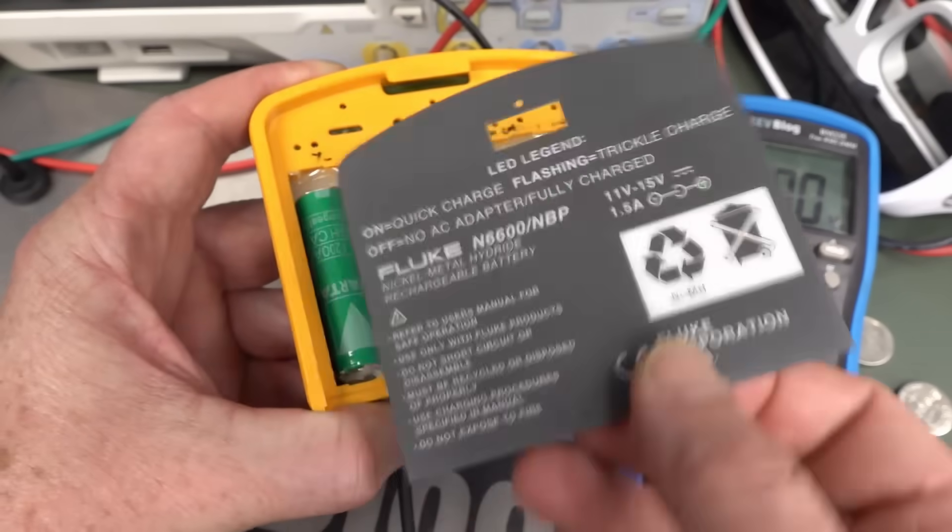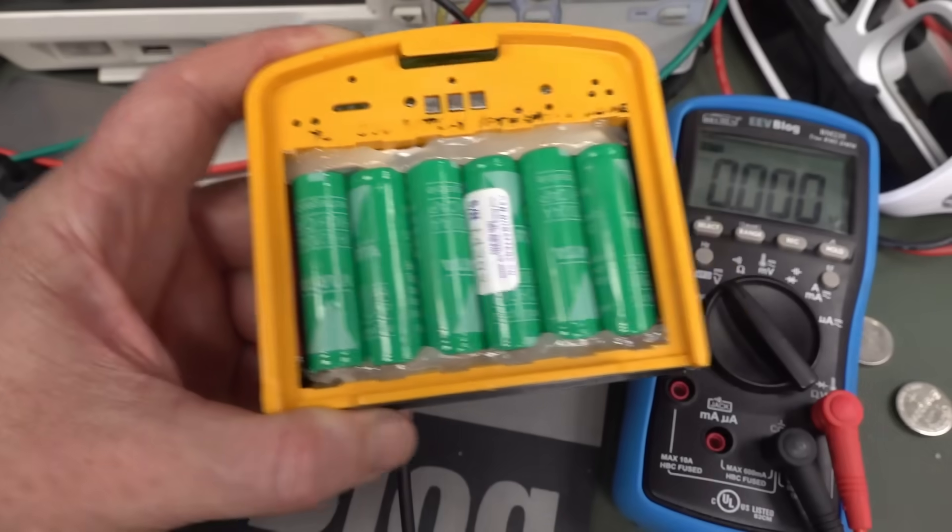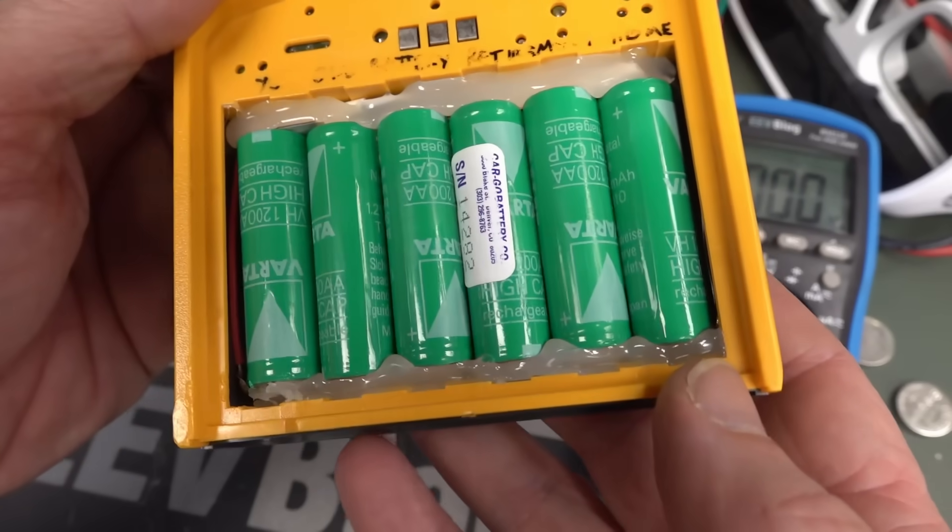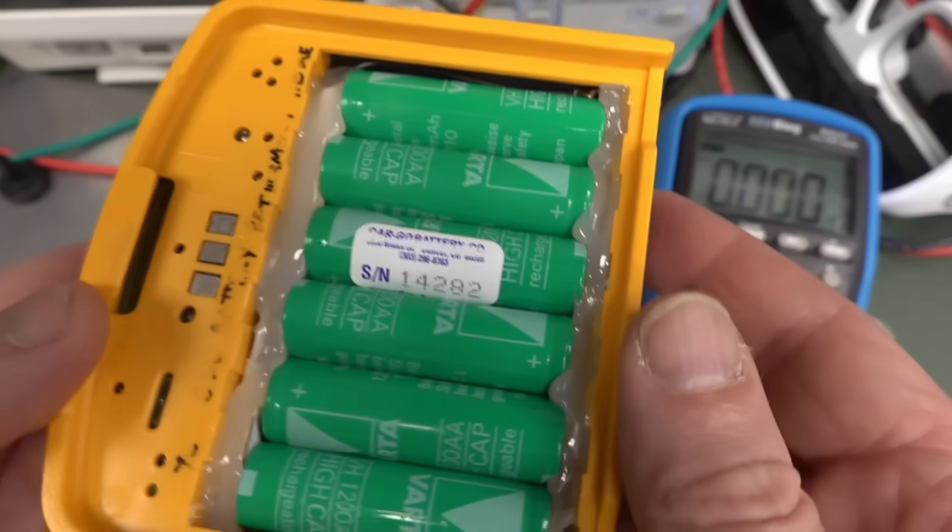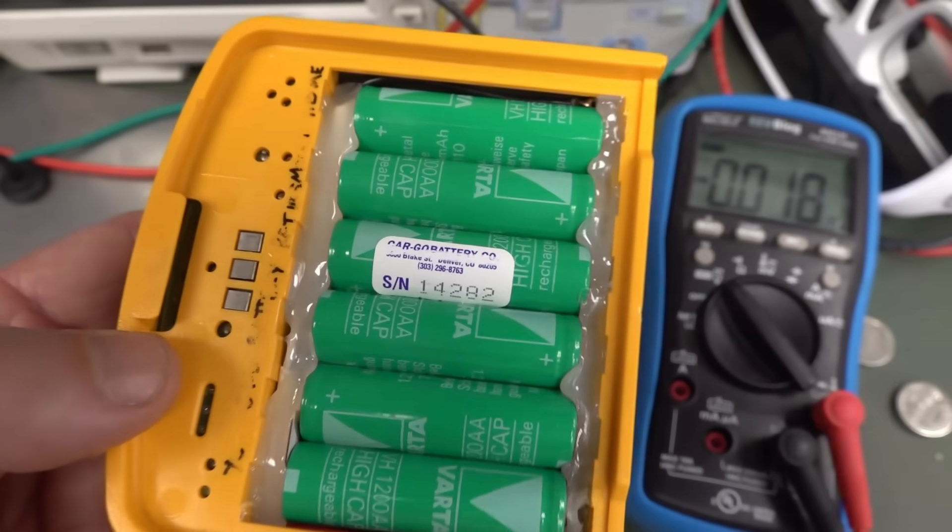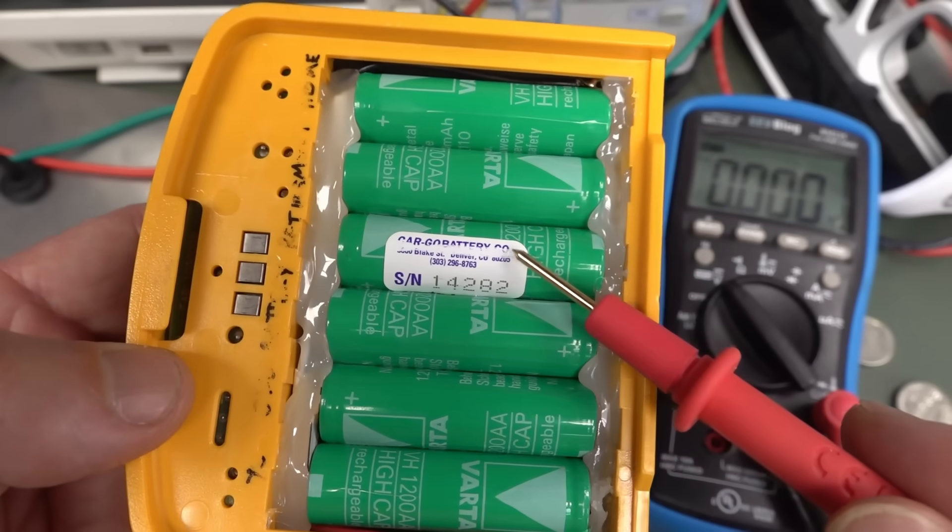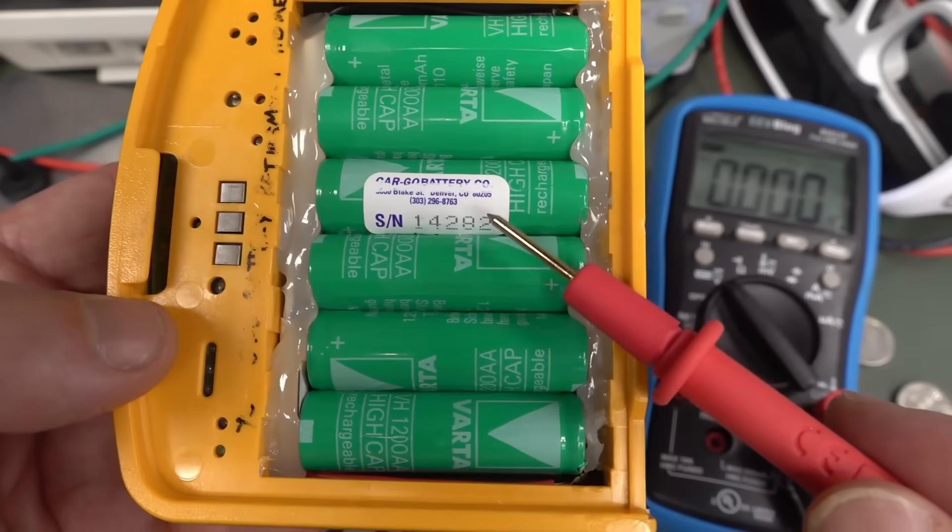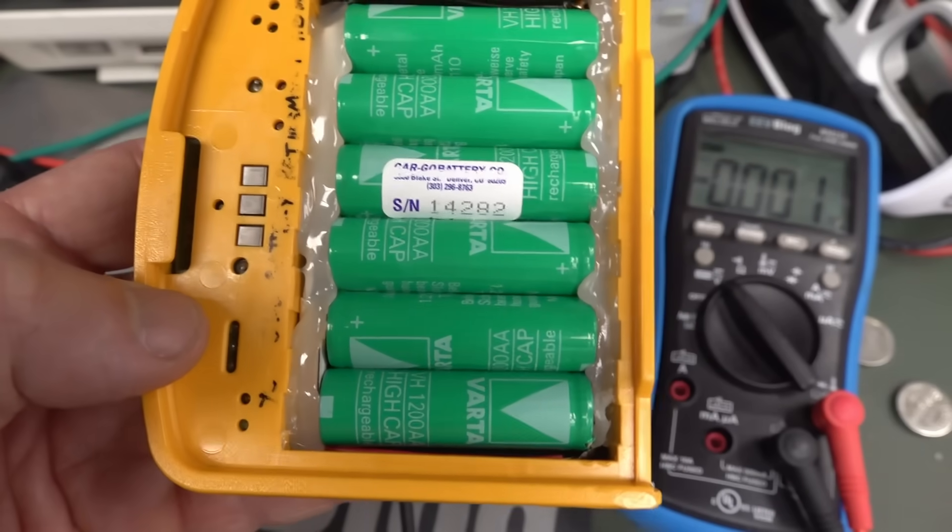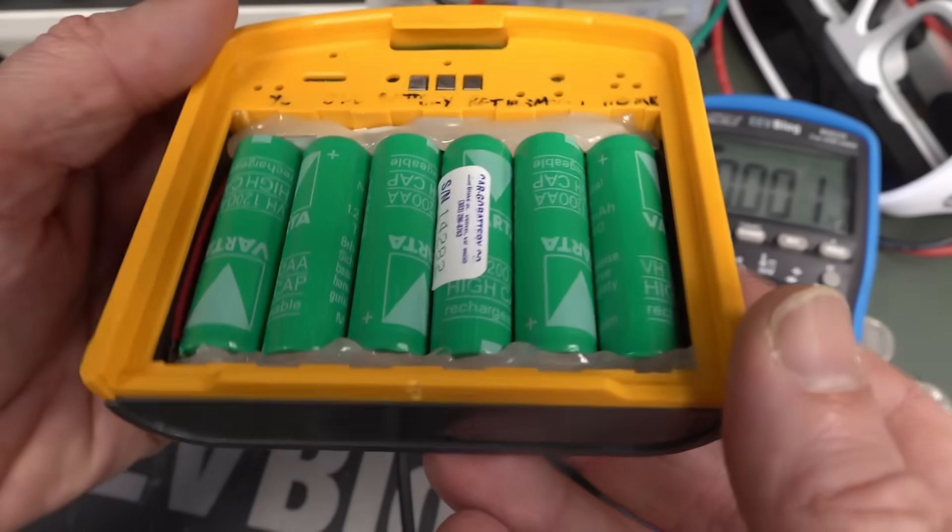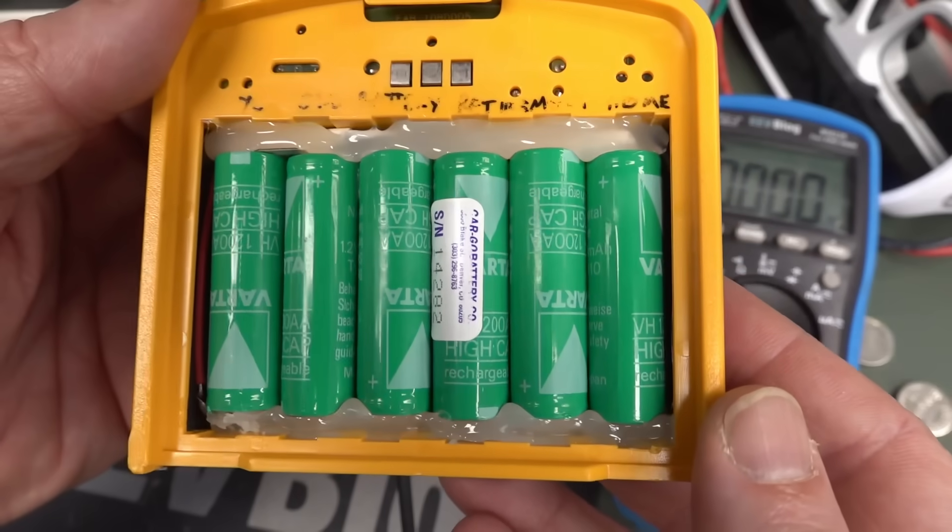But anyway, I thought that we can actually recharge this thing. It turns out you can just lift this off. It wasn't even stuck that well. And look, there's your six NiCAD batteries, Avada jobbies. I don't know, is this already an aftermarket pack, CargoBattery.com? Or is that the original manufacturer of this pack for Fluke? I don't know. Maybe it's been repacked. If anyone knows, please leave it in the comments down below.